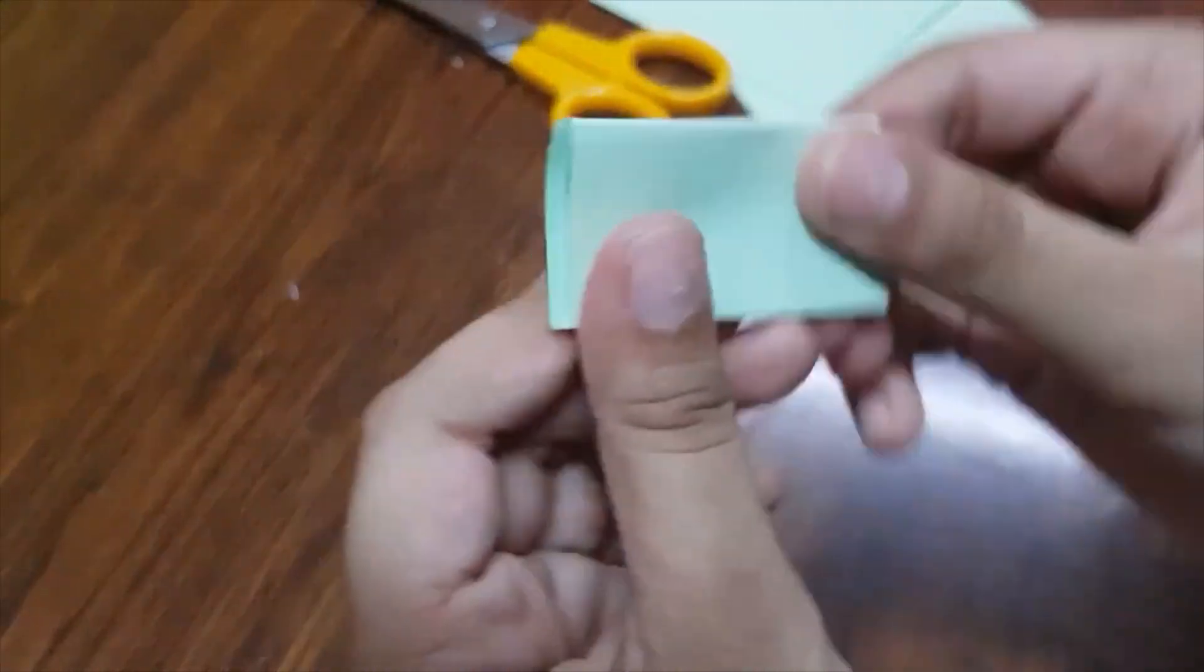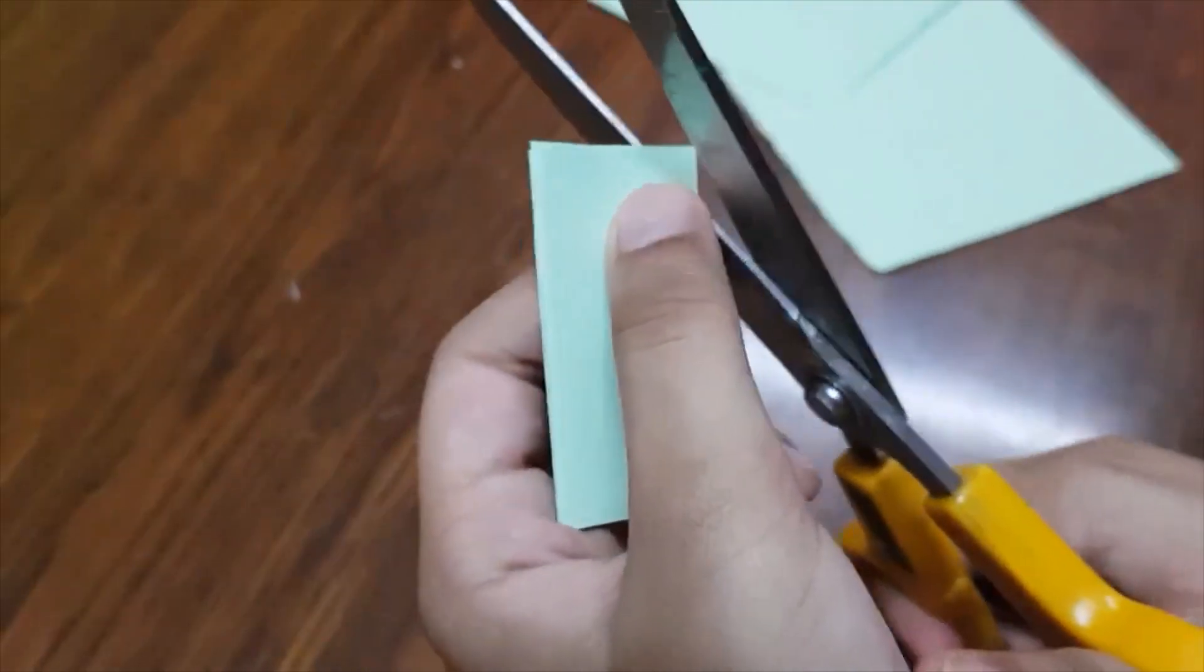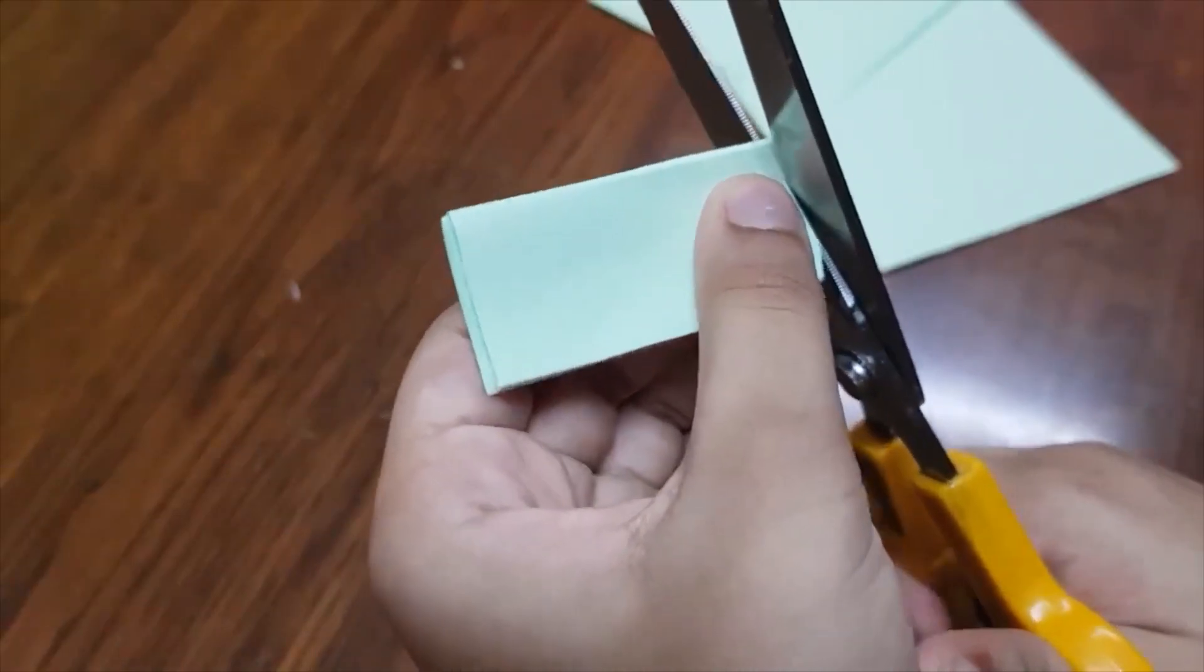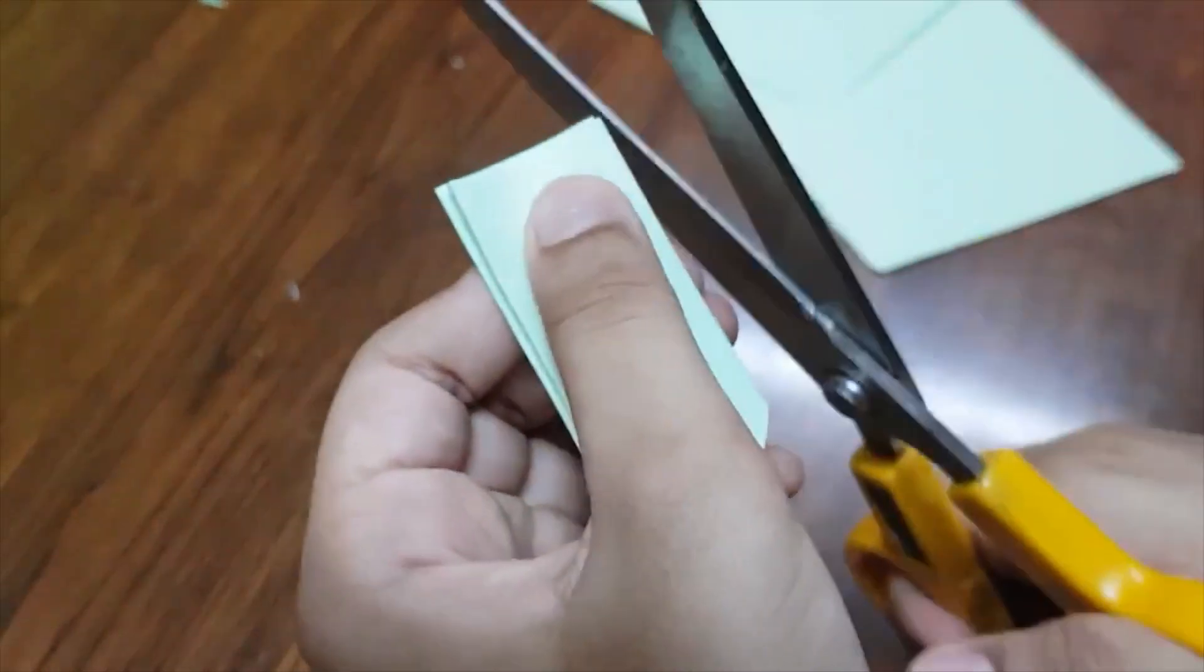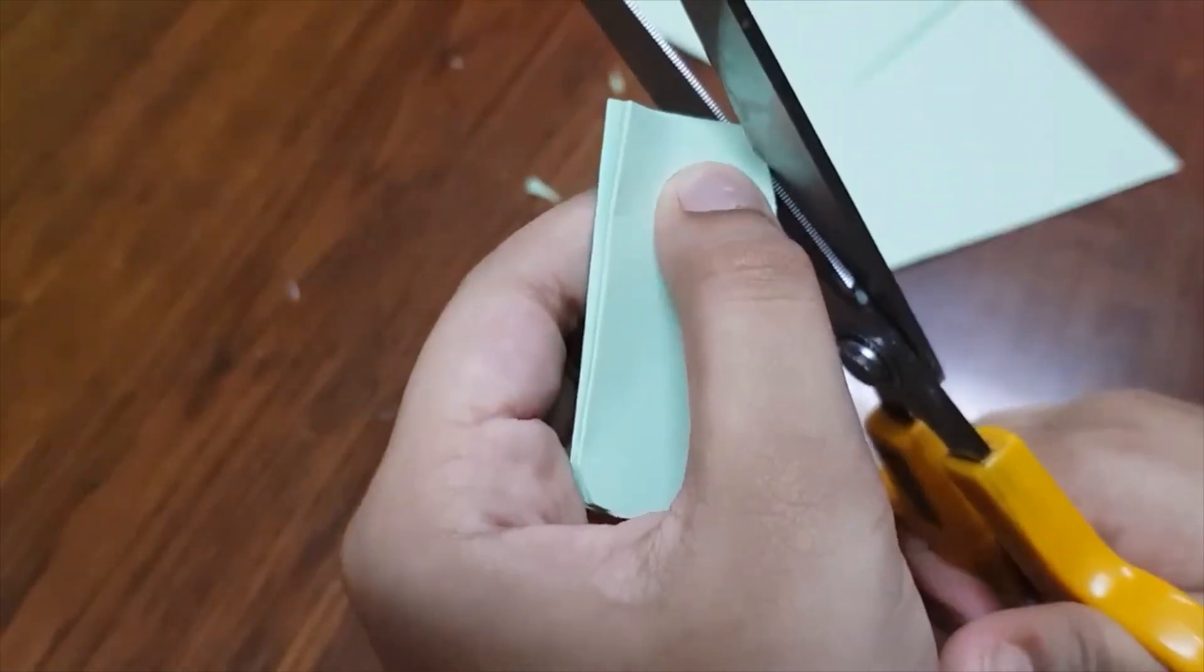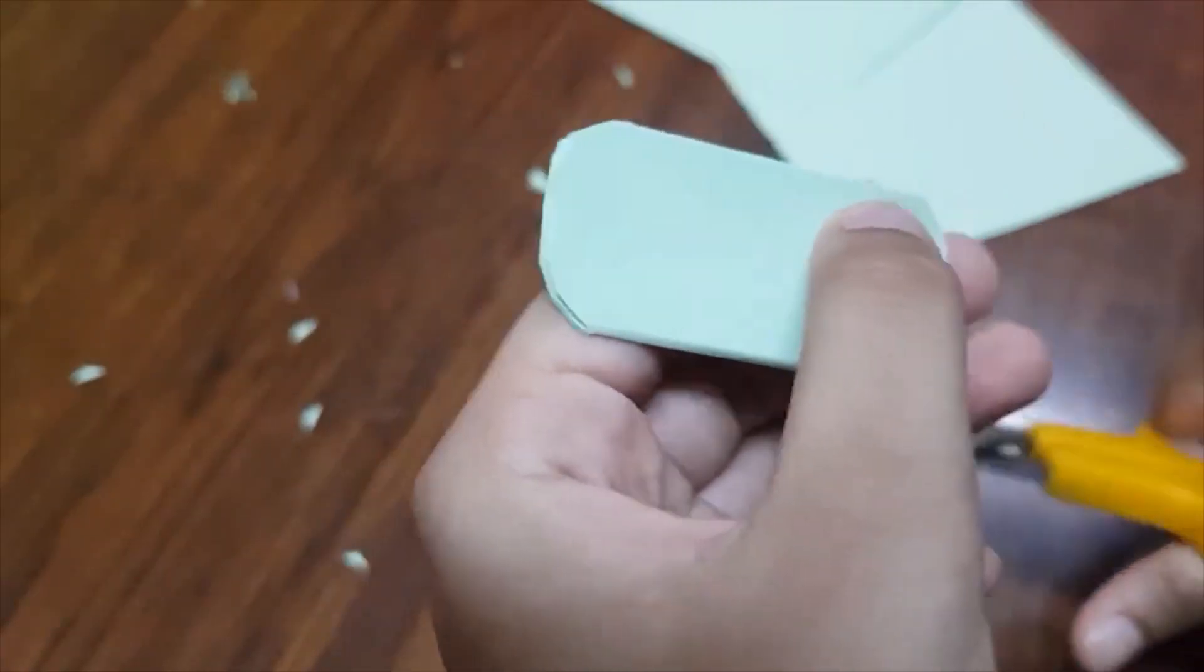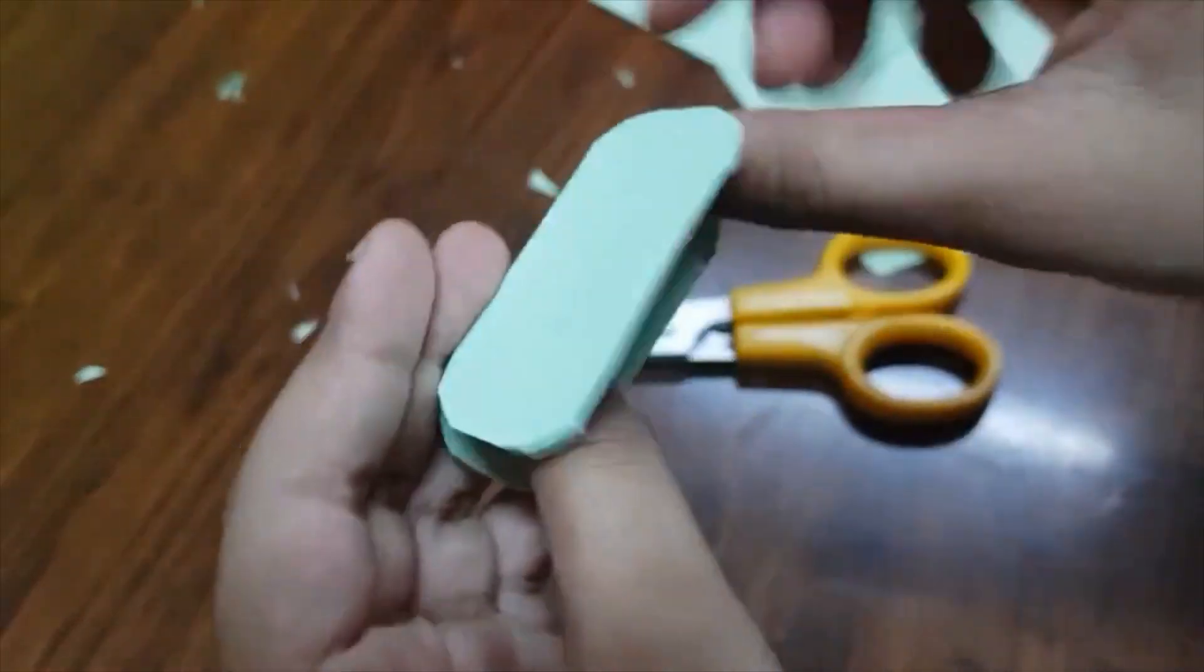Now what you're supposed to do is just fold it fully, just like that. Now we're supposed to cut the ends round because we don't want the edges that sharp, so we're going to be cutting them out, just like that. So last one.